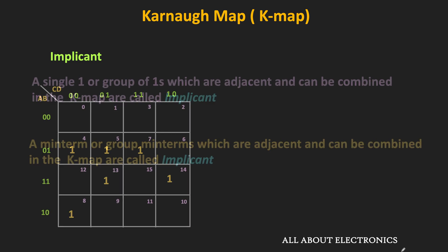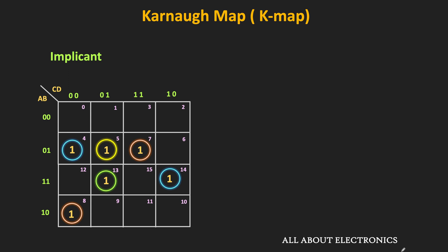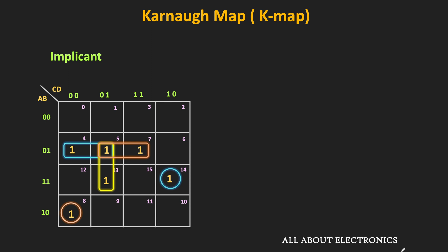Every individual one in the K-map and the group of ones which are adjacent and can be combined in the K-map are called the implicant. For example, all the individual minterms are implicants. Apart from that, the group of minterms 4 and 5 is also an implicant. Similarly, the group of 5 and 13 is also an implicant. Likewise, the group of minterms 5 and 7 is also an implicant. The group of adjacent ones must be in the power of 2, so a group of 3 ones is not an implicant. Also, the shape of the group should be either square or rectangular. That is the basic definition of the implicant.